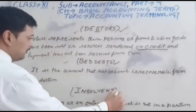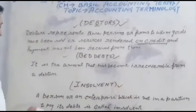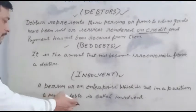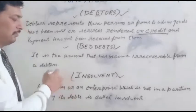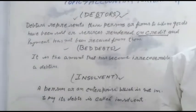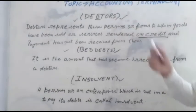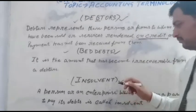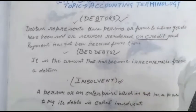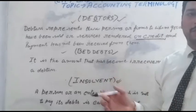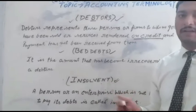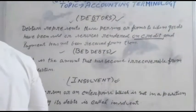Next point is insolvent. A person or enterprise which is not able to make payment of their debts is called insolvent. When a person disagrees or is unable to make the payment of their debts, it is called insolvent. The insolvent is not a decision in the hands of the customer — they have to be announced insolvent. The insolvent has to be announced by the court under the provisions of the law.